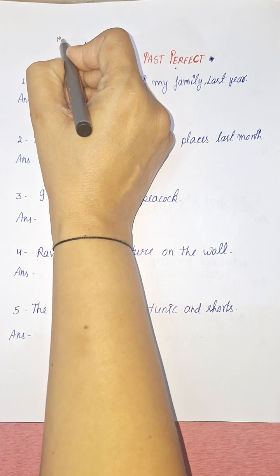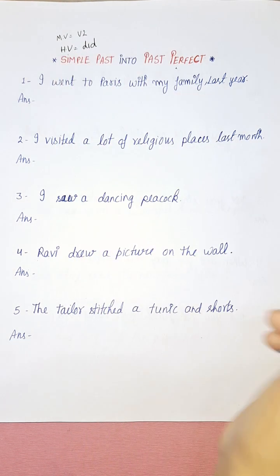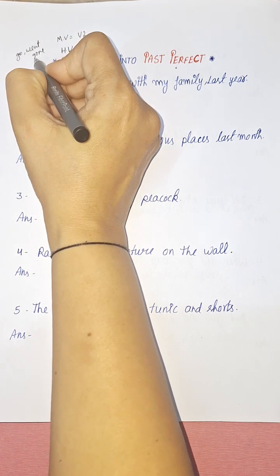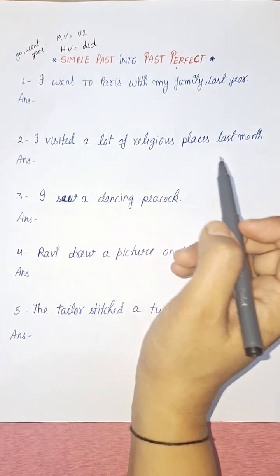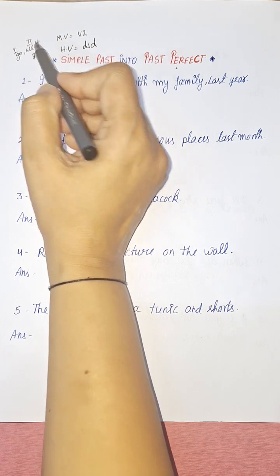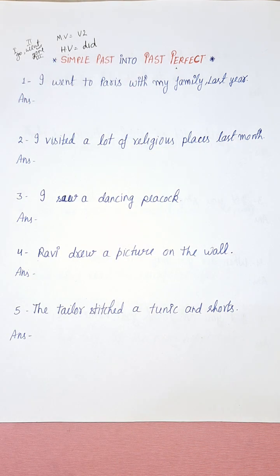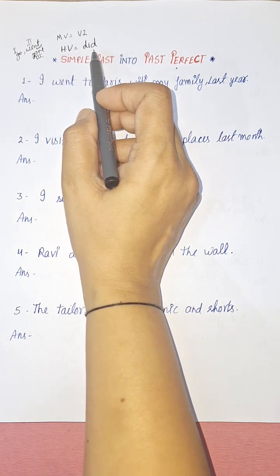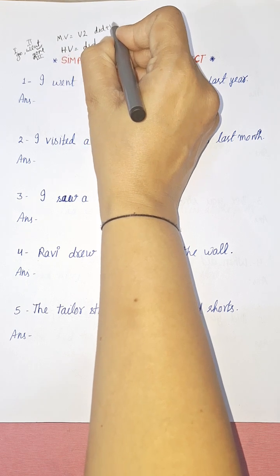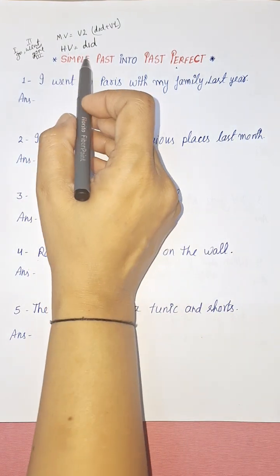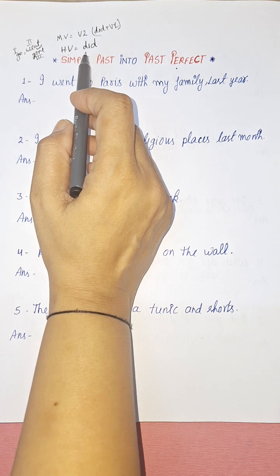As a main verb in simple past, we use the second form of the verb — for example, go, went, gone. 'Went' is the second form. However, when 'did' is used as a helping verb, we always use the first form of the verb — did plus V1. 'Did' is used with all subjects: he, she, it, I, we, you, they — all singulars and plurals.